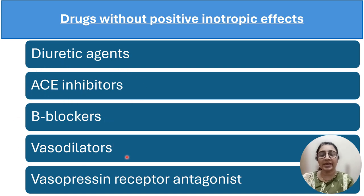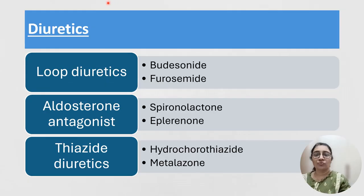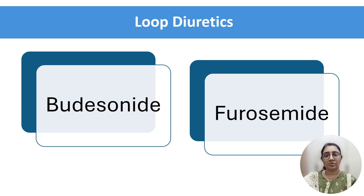Drugs without positive inotropic effects include diuretic drugs, angiotensin converting enzyme inhibitors, beta blockers, vasodilators, and vasopressin receptor antagonists. In the diuretic group, various subgroups exist: loop diuretics such as bumetanide and furosemide; aldosterone antagonists such as spironolactone and eplerenone; and thiazide diuretics such as hydrochlorothiazide and metolazone.